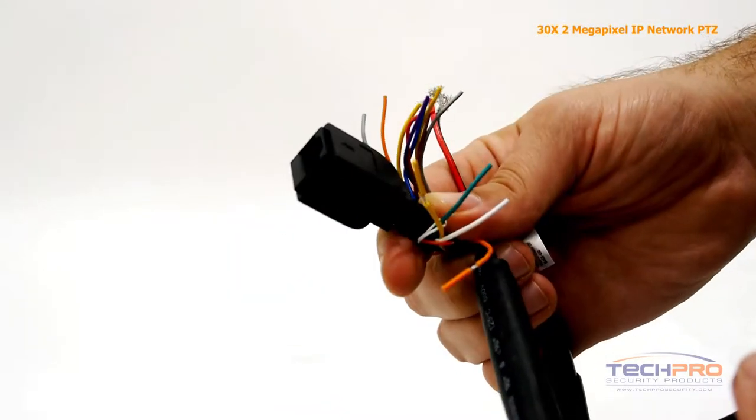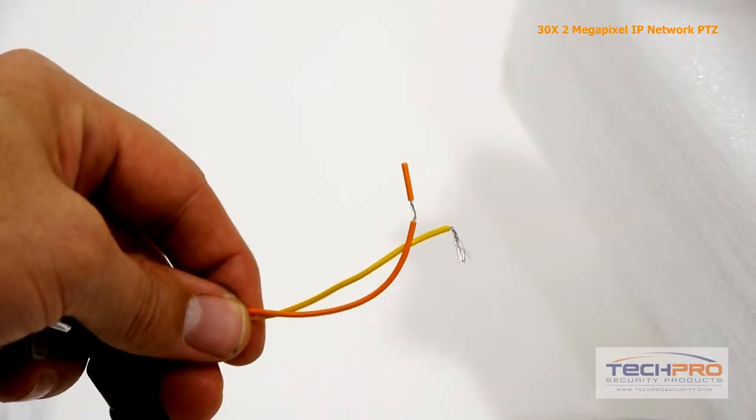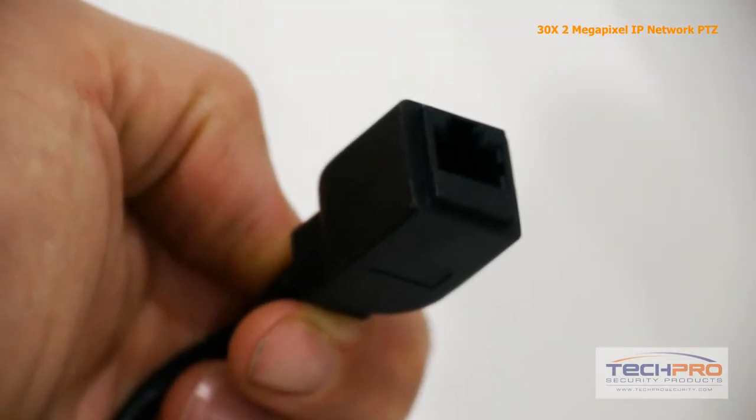The camera has the following connectors: the video out, audio in and out, an RS-485 connector, these are your power cables, an alarm input and output, and an RJ-45 input.